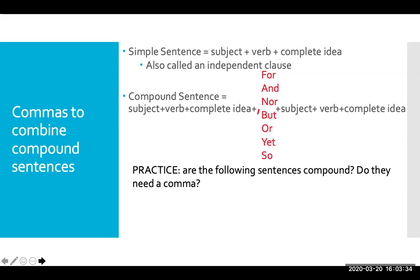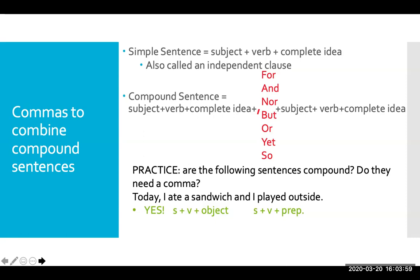Let's go through a couple examples. Is this sentence a compound sentence? Does it need a comma before the coordinating conjunction? 'Today I ate a sandwich and I played outside.' Yes, we have two independent clauses on either side of that coordinating conjunction. We have 'I' as subject, 'ate' as verb, 'a sandwich' — a complete idea. On the other side of 'and,' there's another subject, 'I,' verb 'played,' 'outside' — another complete idea. So I do need to add a comma before my coordinating conjunction.